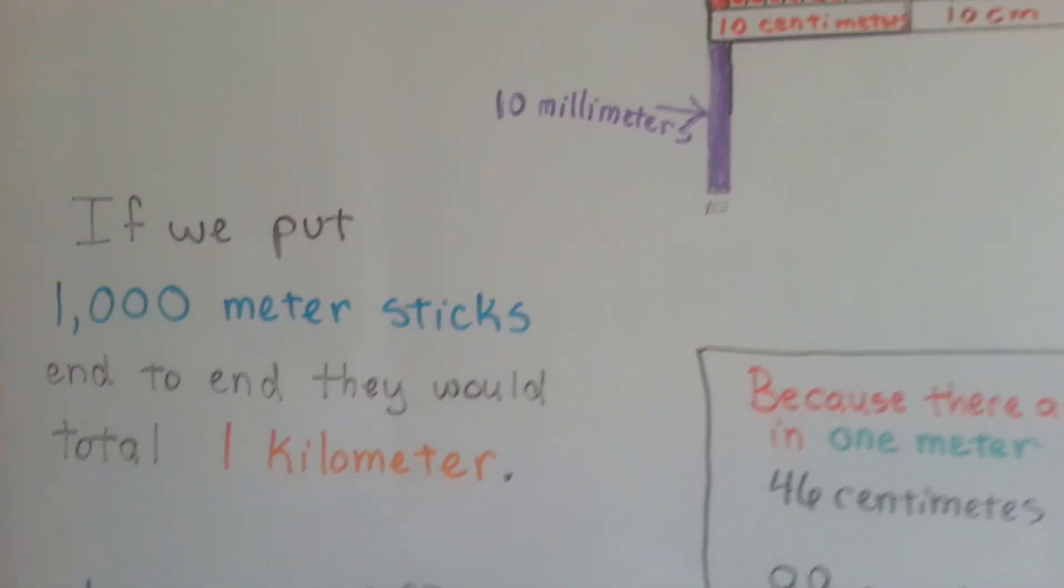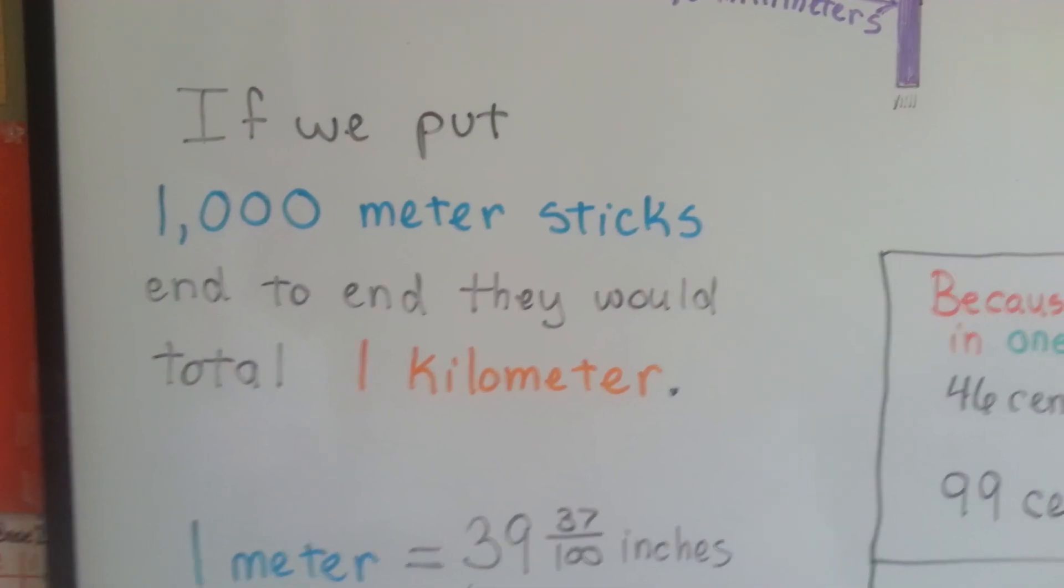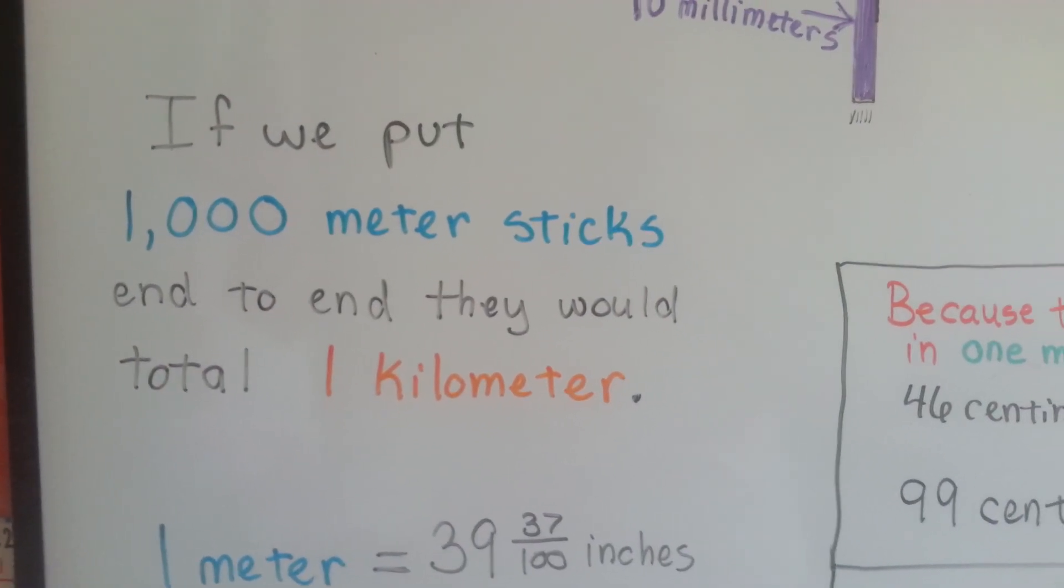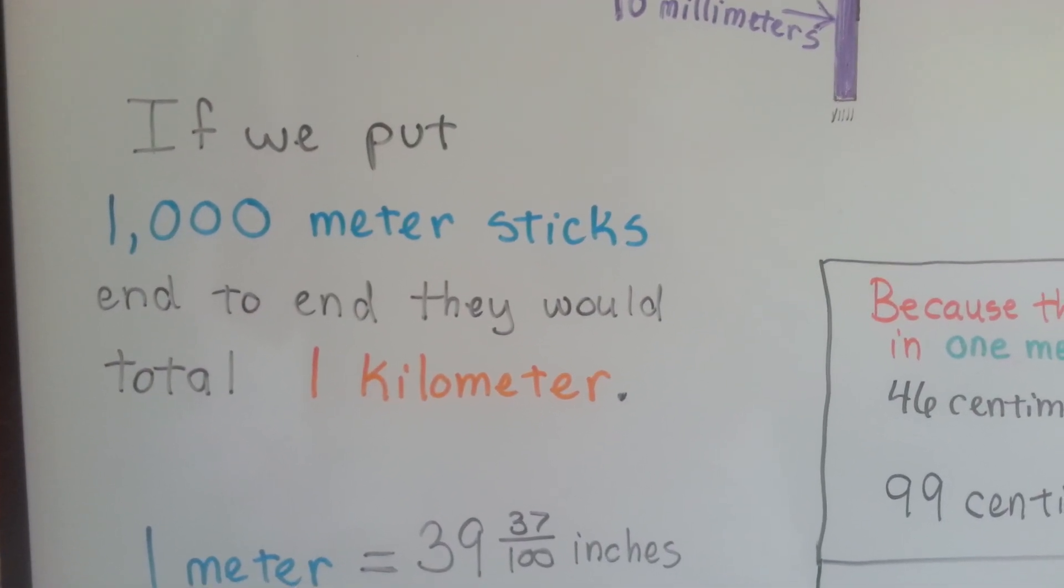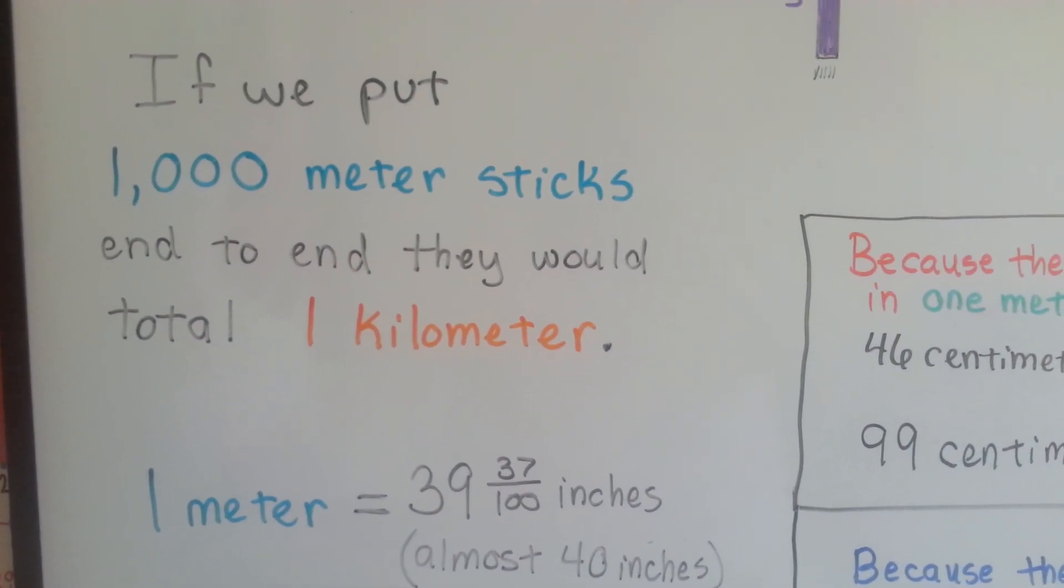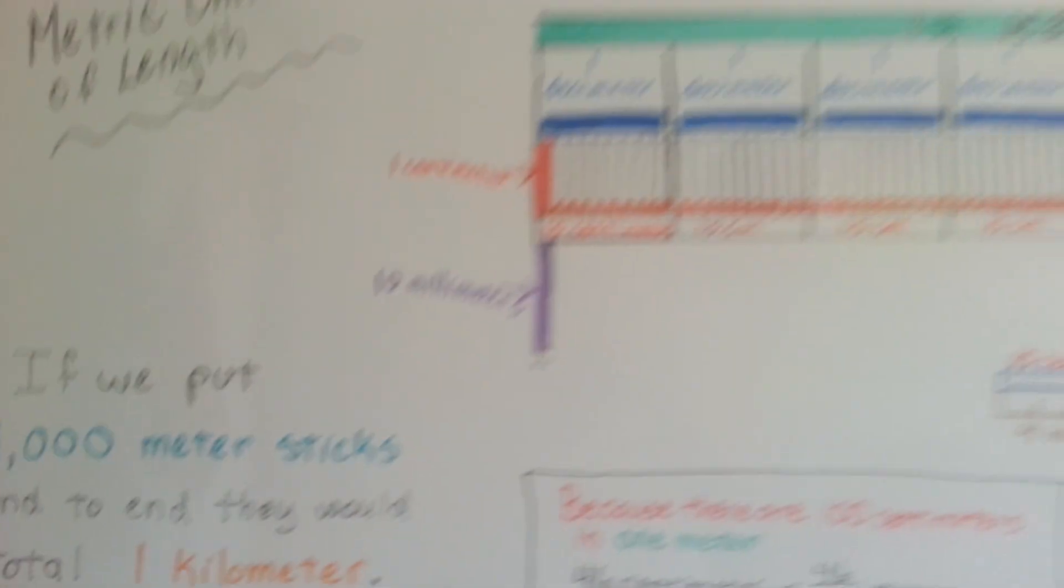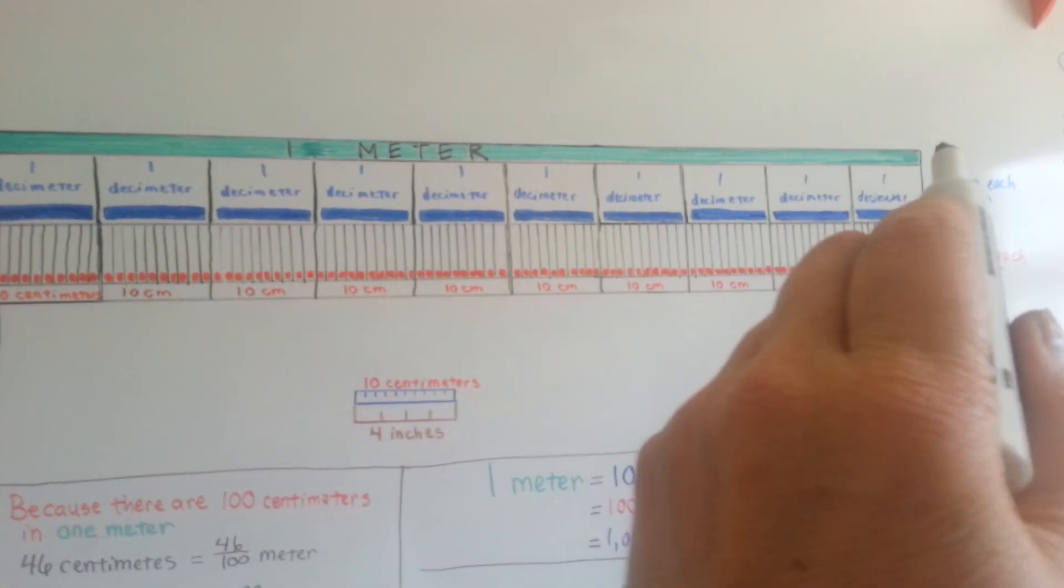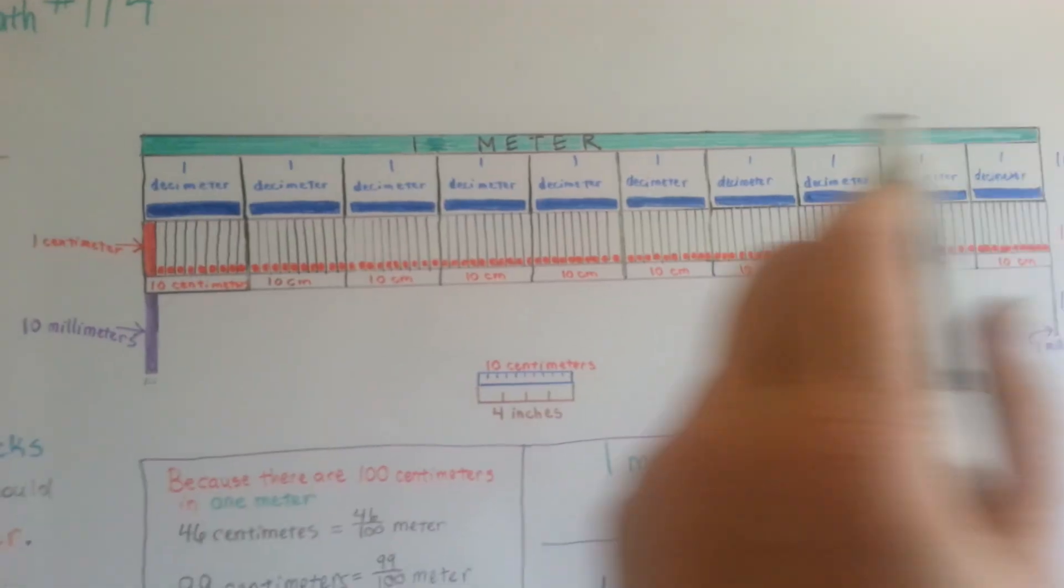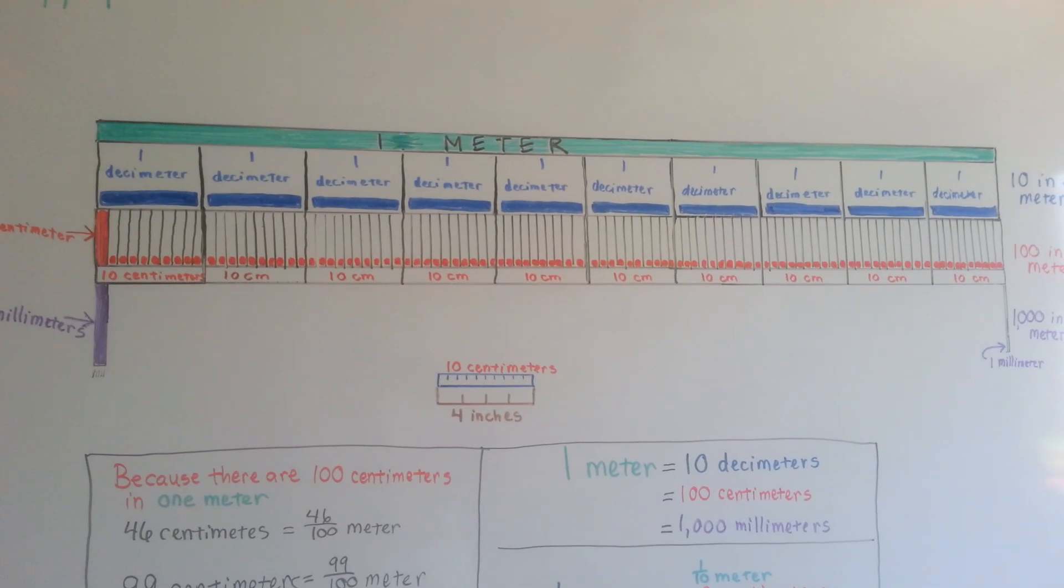If we put a thousand meter sticks end to end, they would total one kilometer. Some people say kilometer, I say kilometer. One meter is equal to thirty-nine and thirty-seven one-hundredths inches. It's almost forty inches. So this green meter line right here, which is an actual meter length, it's almost forty inches long.